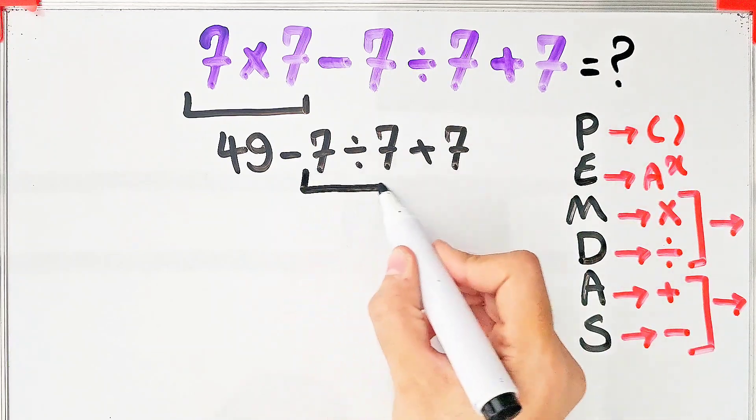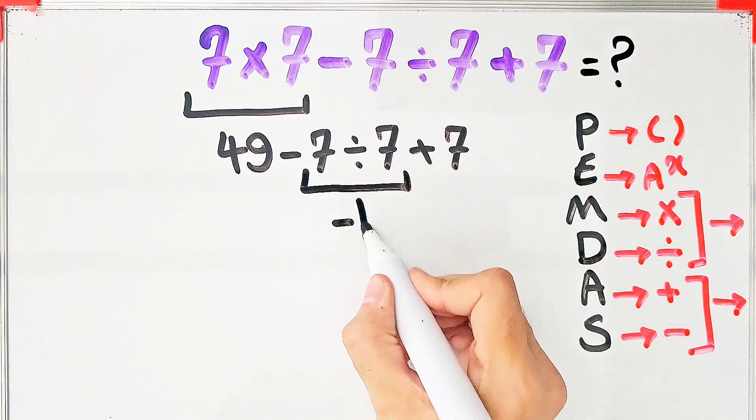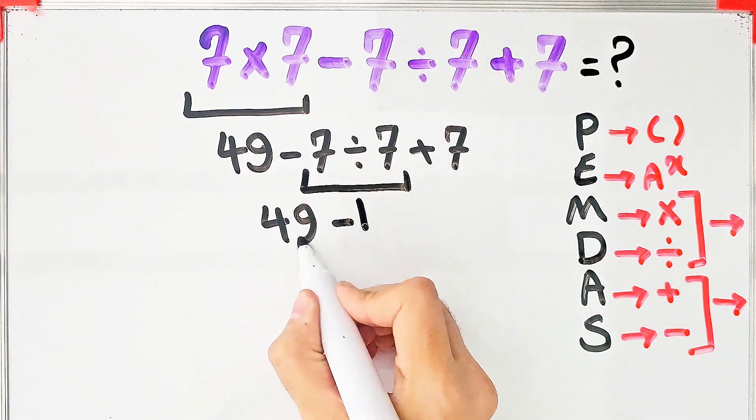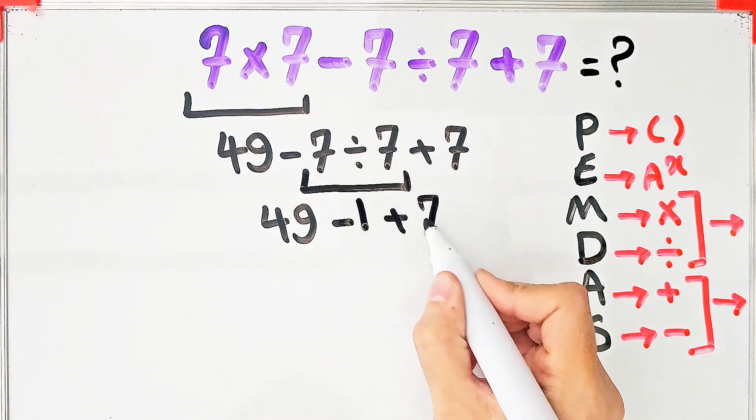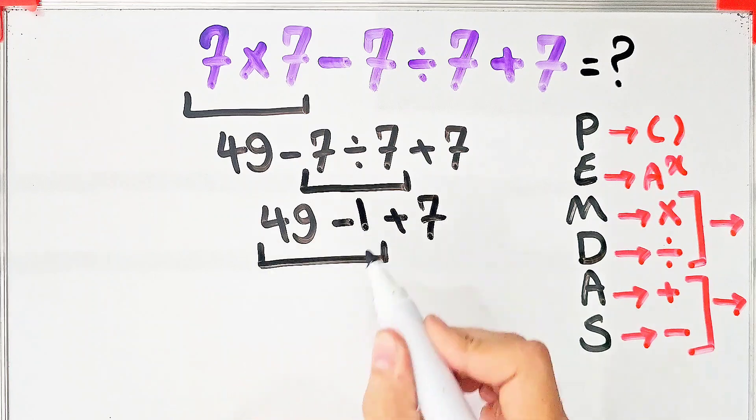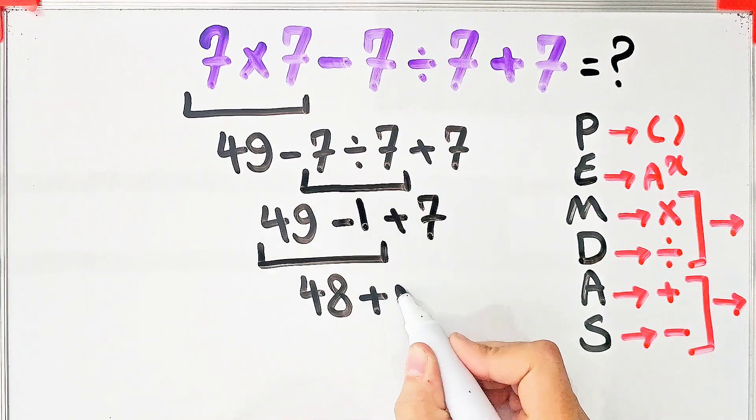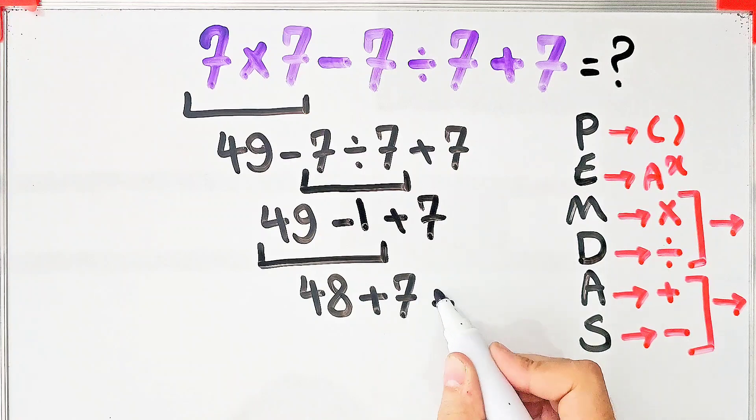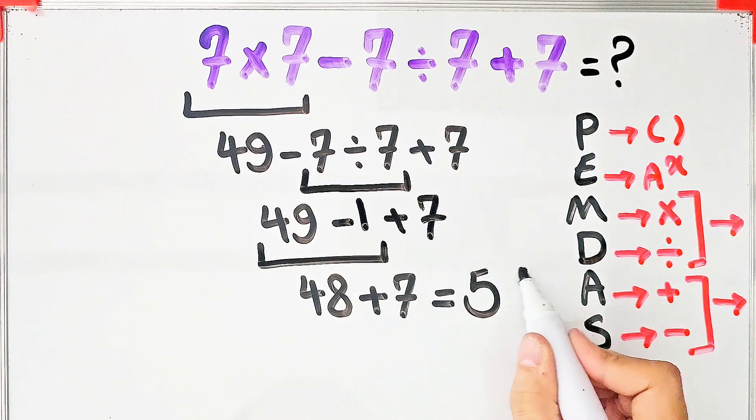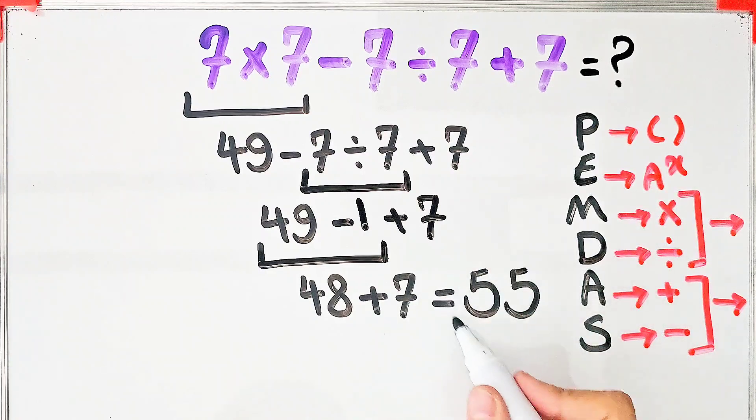7 divided by 7 equals 1. Now we have 49 minus 1 plus 7. 49 minus 1 equals 48, and 48 plus 7 equals 55. The final answer of this question equals 55. Thanks for watching!